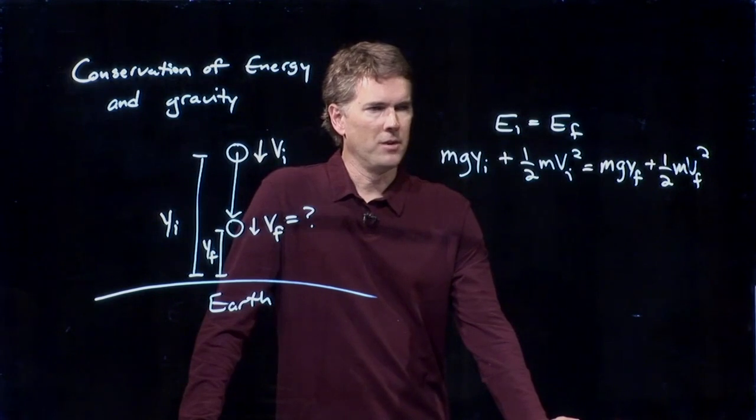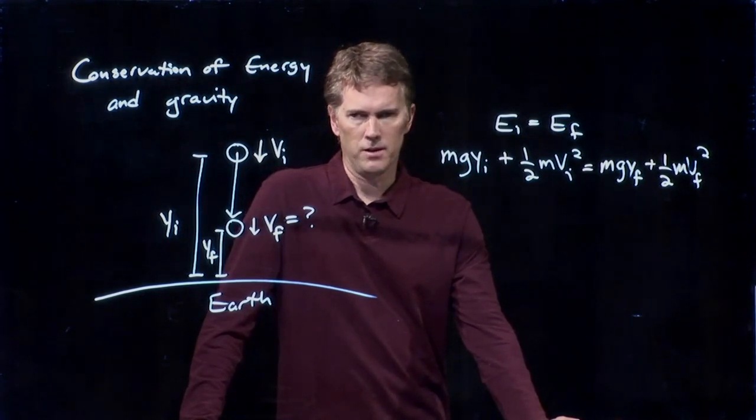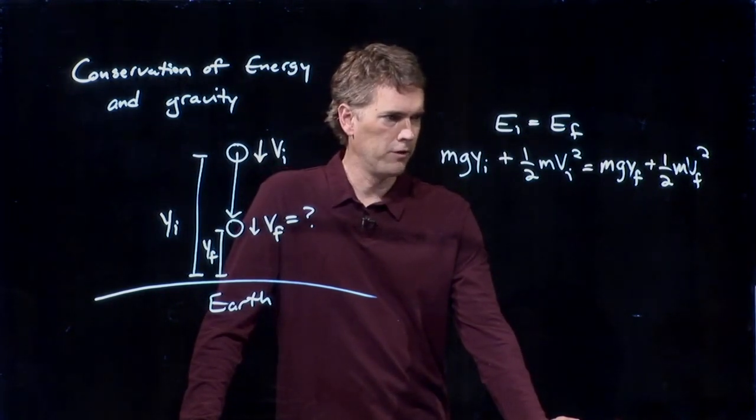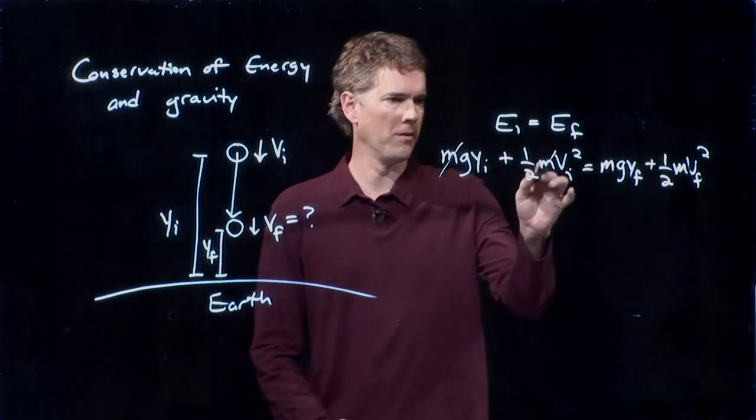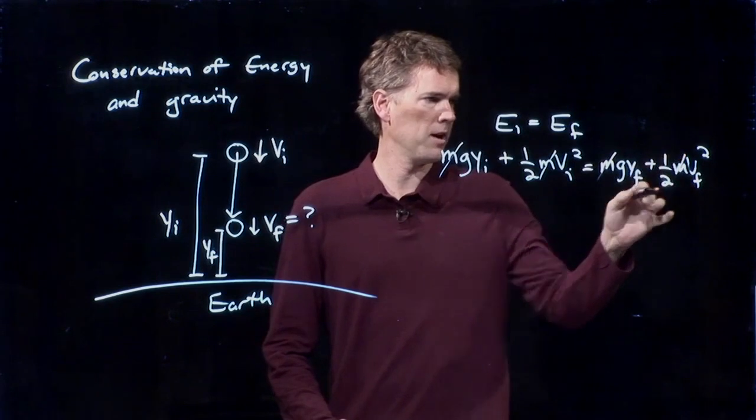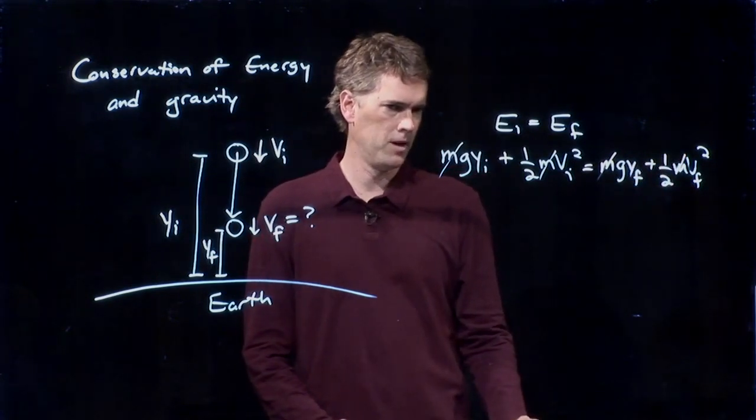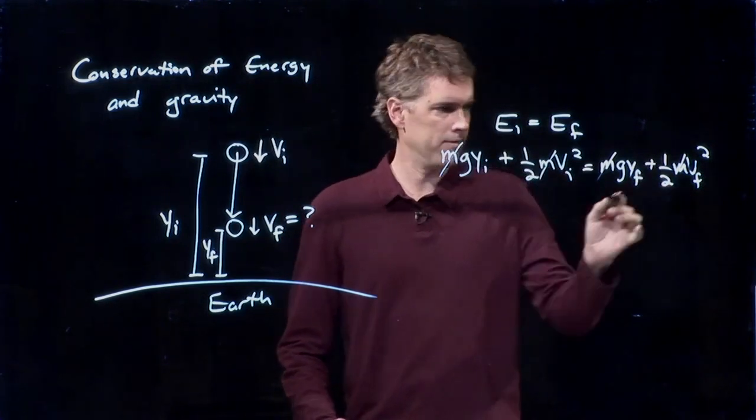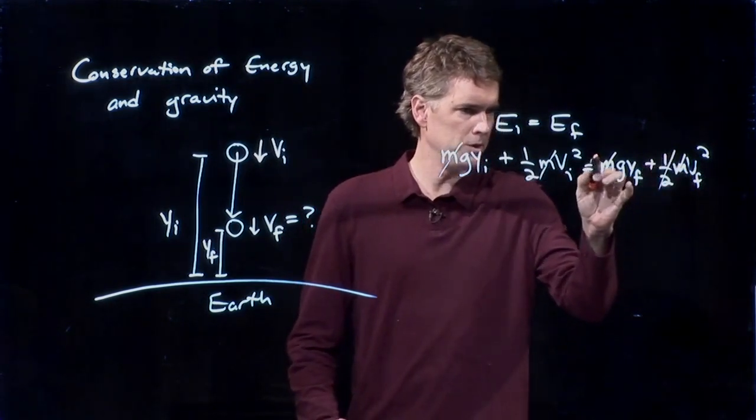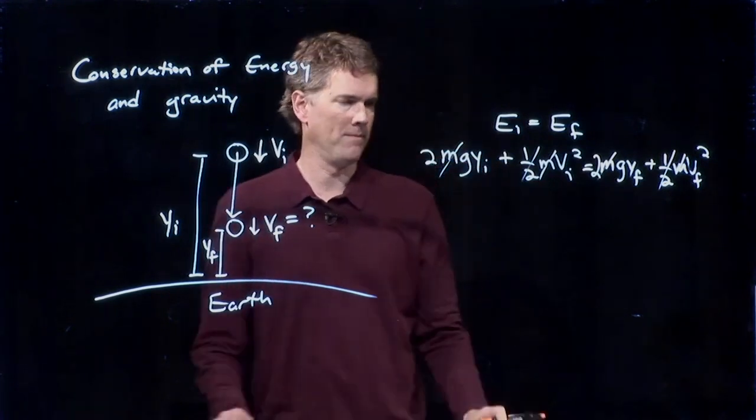And now, let's see if we can put this together and simplify it a little bit. The first thing you notice is there is an m everywhere. So I can cross out the m everywhere. The other thing you notice is I've got a half and I've got a half. Now, if I multiply by 2, I can do that.